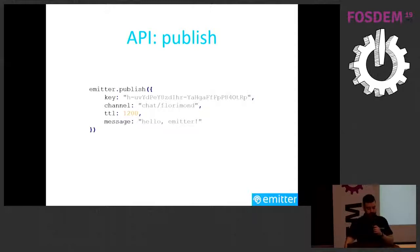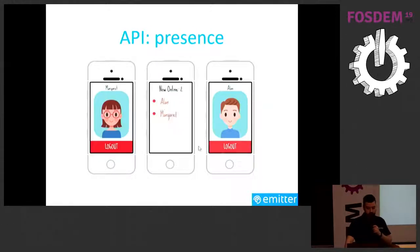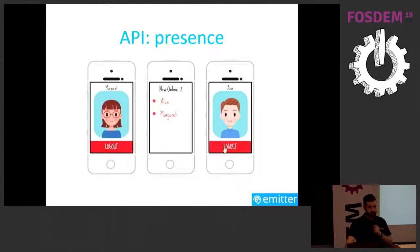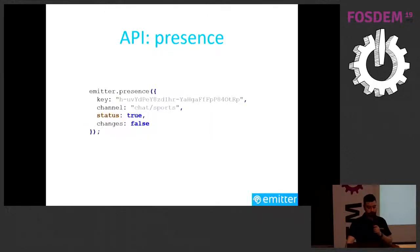There's also the presence feature, which lets you monitor which devices are subscribed to a channel — very useful for lobbies. To use it, call emitter.presence(), providing an API key and the channel to monitor. It has two parameters: 'status', which if set to true immediately returns a list of subscribers, and 'changes', which if set to true sends events whenever a person subscribes or unsubscribes from the channel.